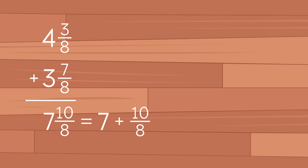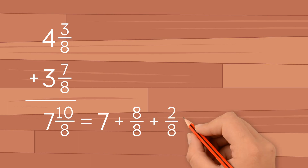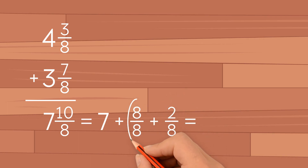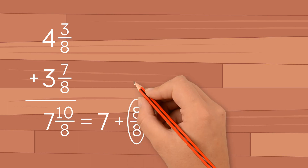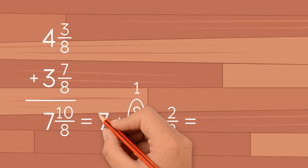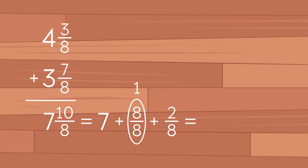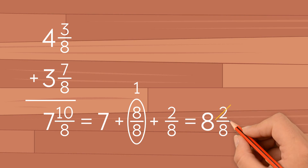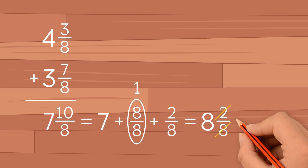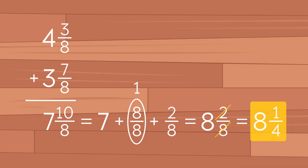But 10 eighths is an improper fraction because it's greater than 1. 10 over 8 is the same as 8 over 8 plus 2 over 8. 8 over 8 equals 1, so we add the whole number parts: 7 plus 1 gives us 8. So we have 8 and 2 eighths. We can simplify it to 8 and 1 fourth, which is our final answer.